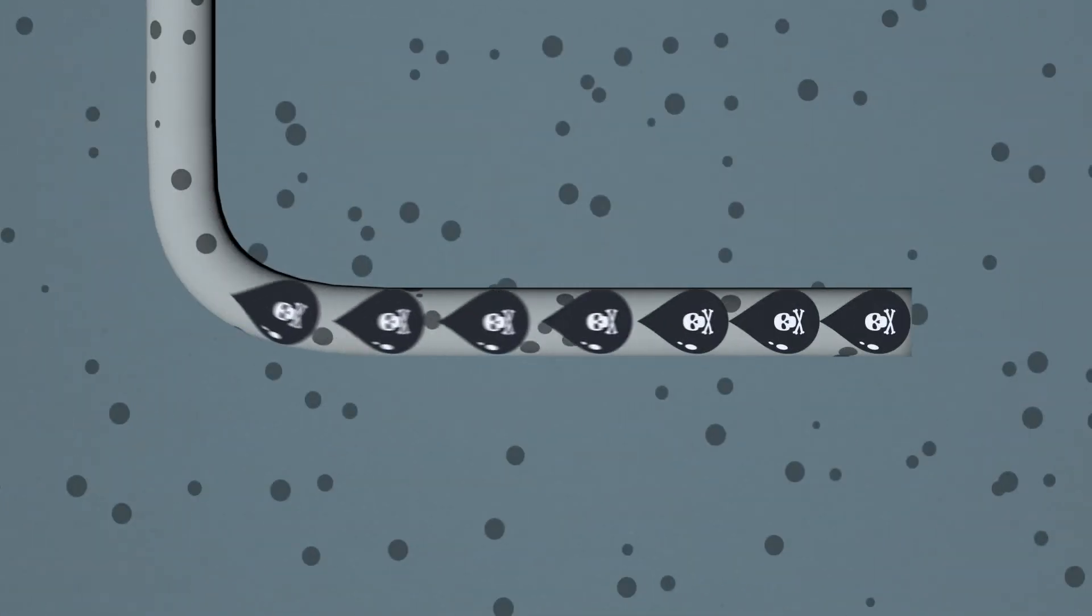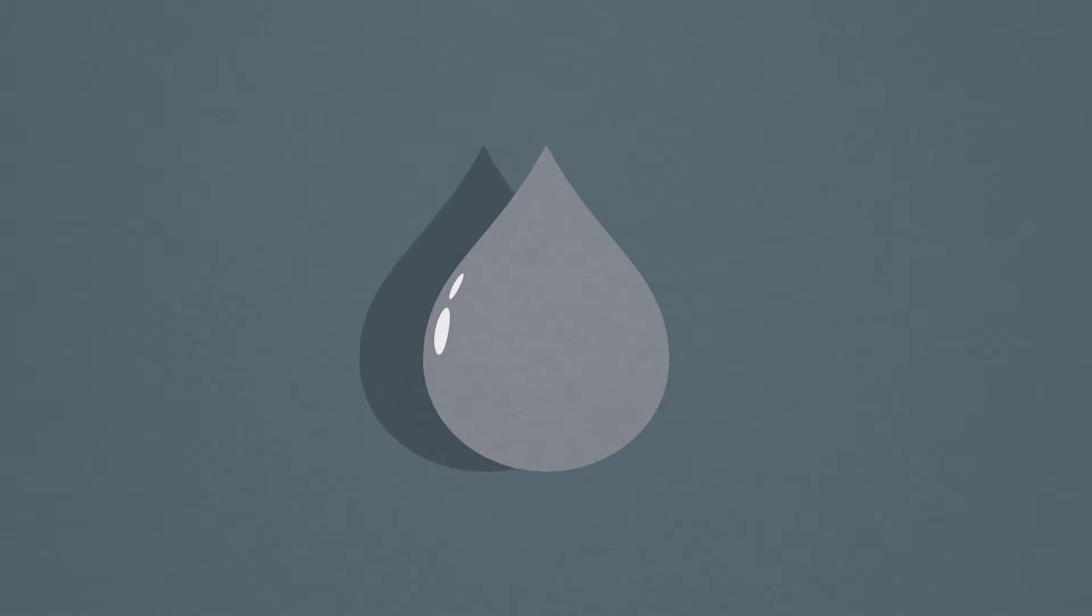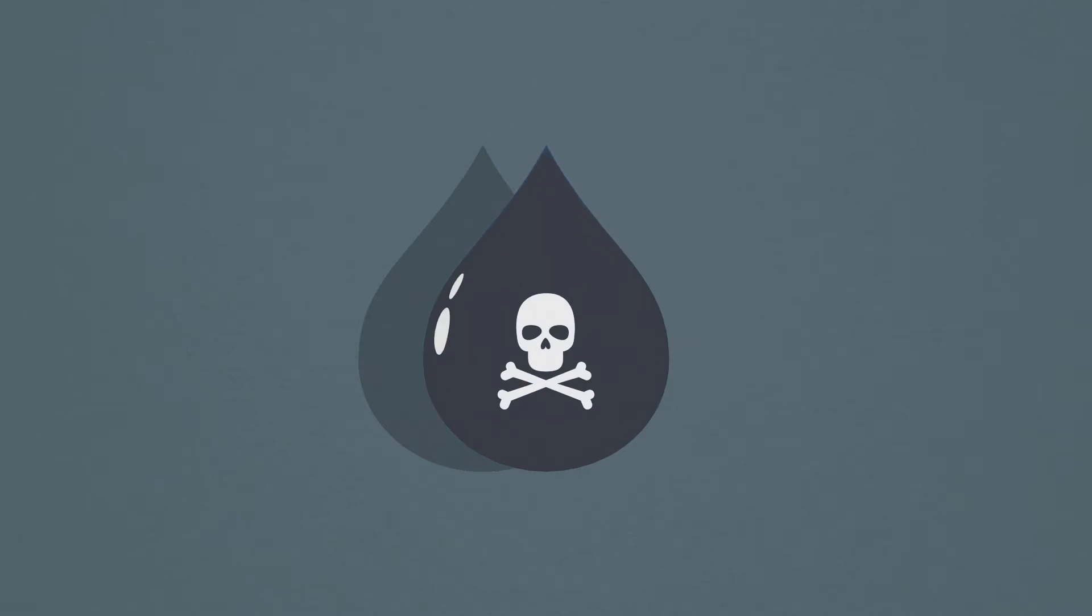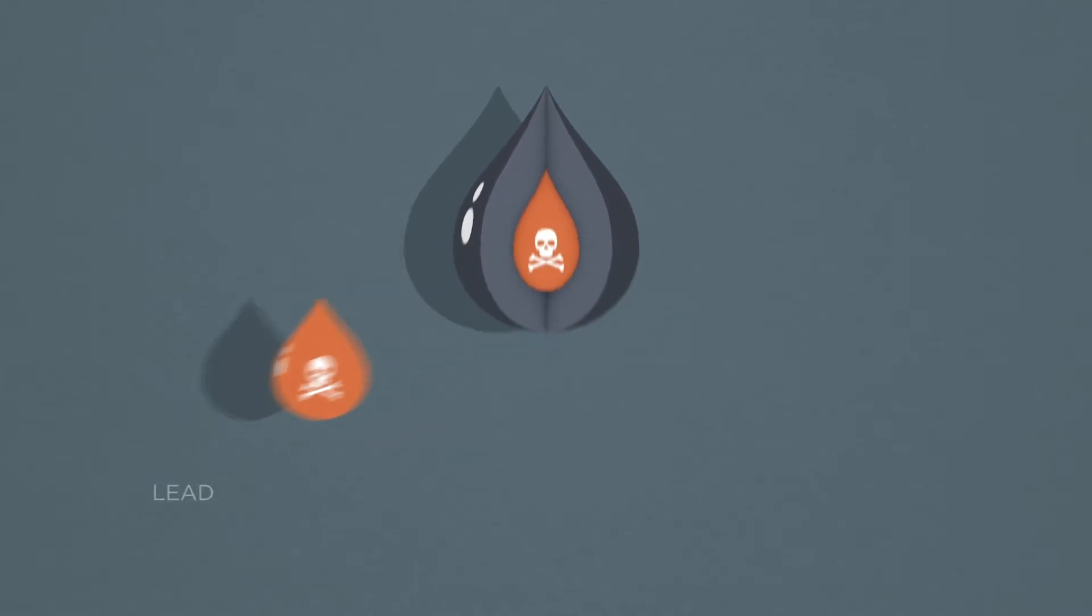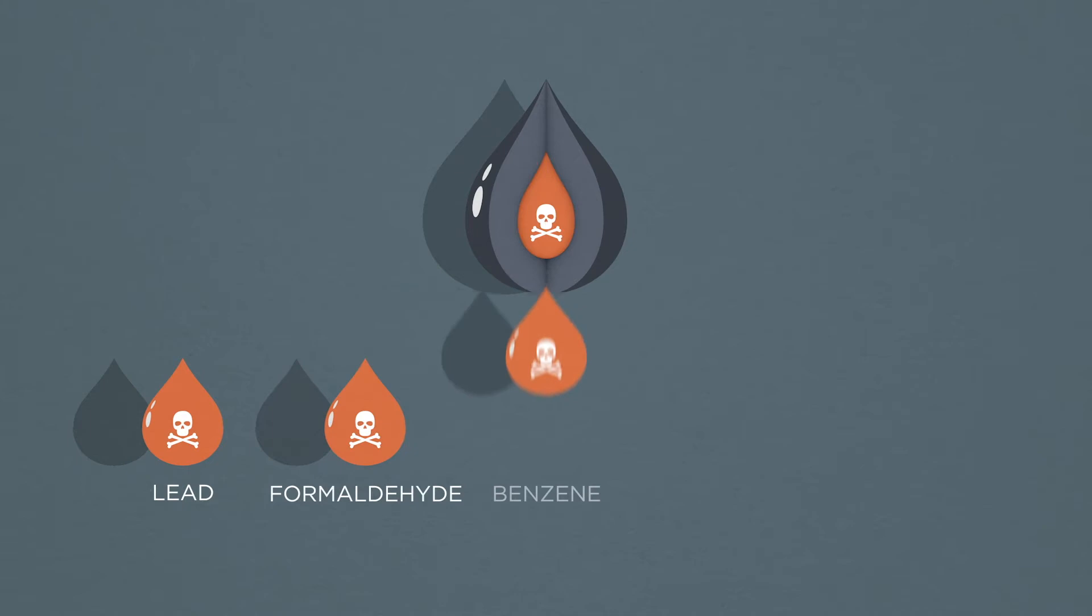Then fracking fluids are injected. This toxic cocktail requires millions of gallons of fresh water mixed with some of over 600 chemicals, including known carcinogens like lead, formaldehyde, and even more the fossil fuel industry won't disclose.